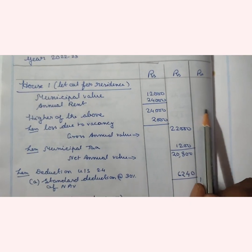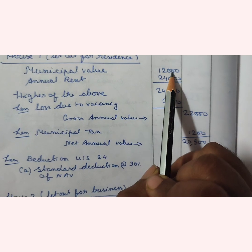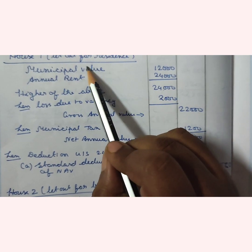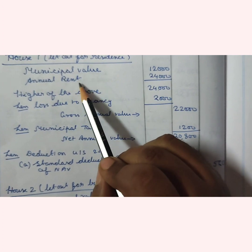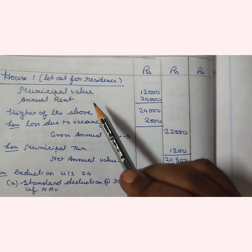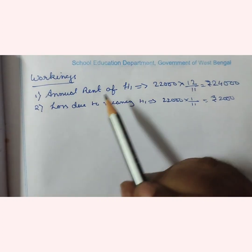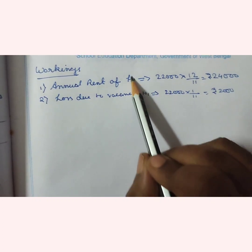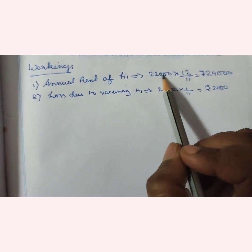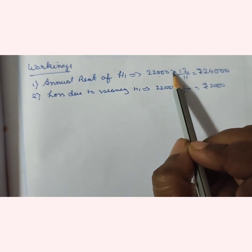There are two houses so we have to draw three amount columns. House 1 is let out for residence. Municipal value given is ₹12,000. Fair rent and standard rent are not given, so we are comparing municipal value and annual rent. Annual rent is not directly given — rent received is ₹22,000 and there is a vacancy period of one month, so we convert rent received into annual rent. Annual rent of House 1: ₹22,000 is the rent received for 11 months, so dividing 22,000 by 11 and multiplying by 12.